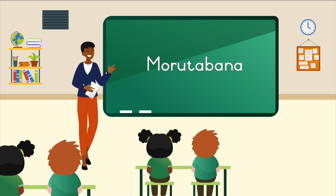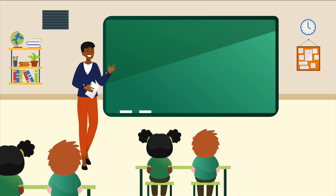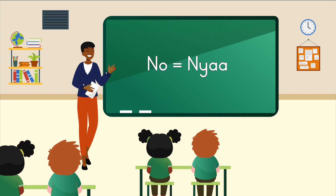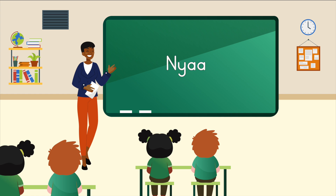I am Murutabana. Say it with me: Murutabana. Do you know what Murutabana means? Yes or no? Yes is ee and no is nya in Sichuan. Say it with me: ee or nya. Murutabana is teacher in English.